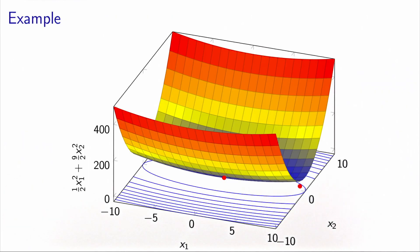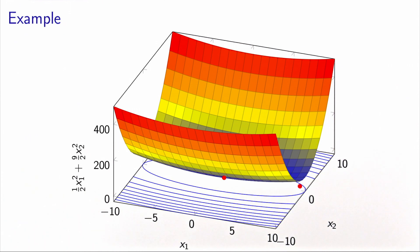Let's illustrate this idea on an example. Here we have a function of two variables, x1 and x2. The function happens to be a quadratic function: it's one-half x1 squared plus nine-halves times x2 squared. We will apply the steepest descent algorithm starting from a given point. In this case, the solution is at (0, 0), which is easy to calculate.